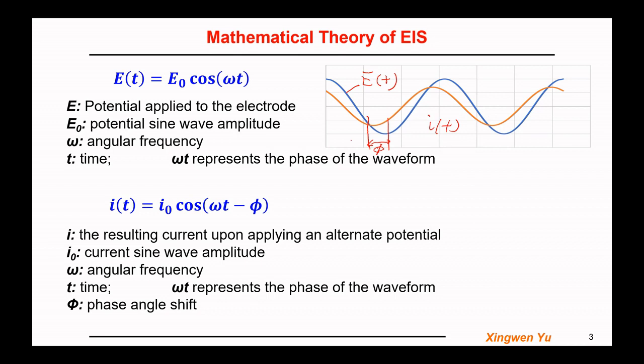The corresponding current upon applying the alternating potential can be expressed as I(t) = I₀·cos(ωt − φ). I₀ here is the current sine wave amplitude, ω is the angular frequency, t is the time. ωt represents the phase of the waveform, and φ is the phase angle shift.